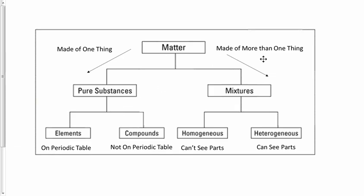Now, what if you're made out of more than one thing? Well, then you're a mixture and you have two choices. Can you see the parts of the mixture or can you not see the parts? If you can't see the parts, it's called a solution or a homogeneous mixture. If you can see the parts, then it's called a heterogeneous mixture.